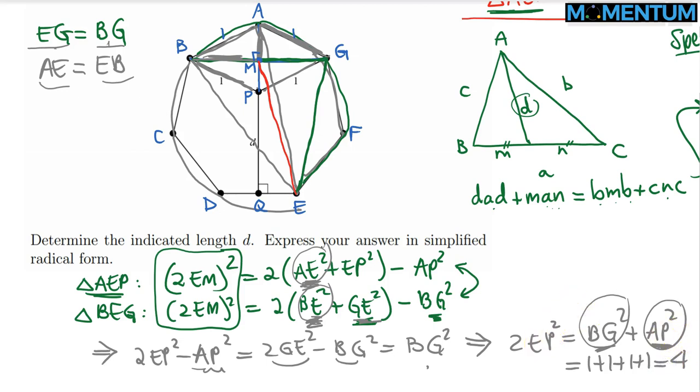Now finally, if EP is root 2, we can consider this right triangle. QE is one half, EP, the hypotenuse is root 2, and d squared, using Pythagoras, d squared equals root 2 squared minus one half squared, 2 minus one over 4, that's just seven over 4. And indeed, if you take the square root, d comes out as root 7 divided by 2.